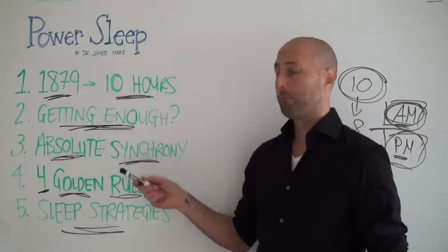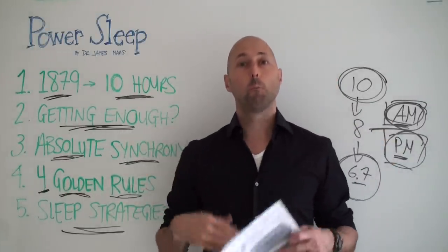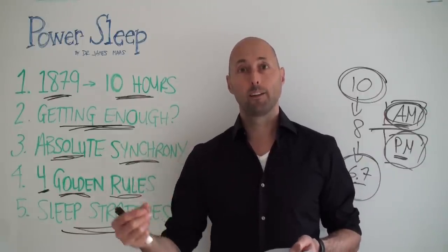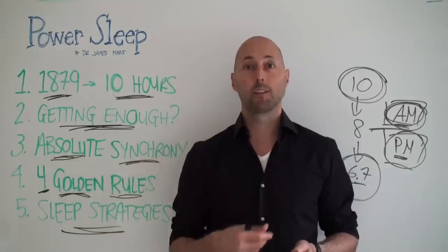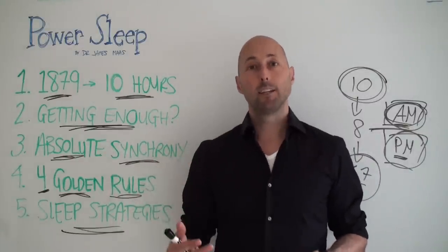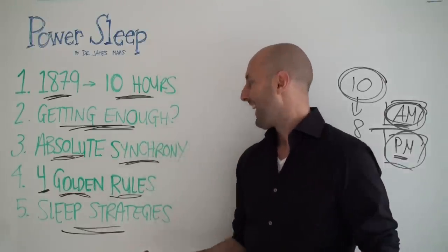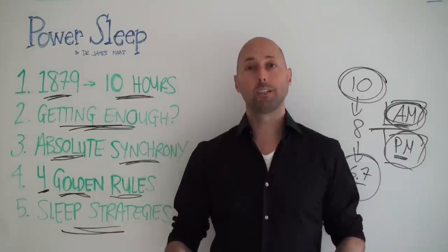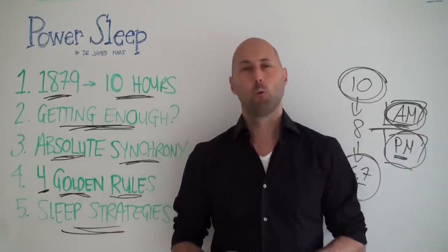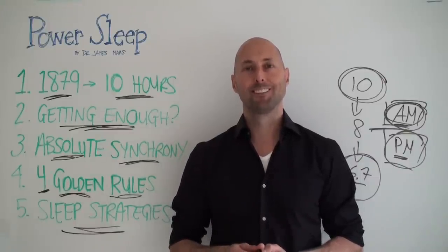Ten hours, getting enough, absolute synchrony. I love the idea of book ending our days, AM and PM rituals. What can you do to create more consistency? He says absolute synchrony, seven days a week, going to bed at or around the same time and getting up at or around the same time. Super powerful ideas. We talked about the four golden rules: get enough, be regular, make it continuous, and make up for lost sleep. And then we talked about some sleep strategies. Power of sleep. Quick look at this great book. Get your sleep on. If you're getting enough, congratulations. If you're not, what can you do to take one baby step toward optimizing that part of your life? Hope you dug it. Look forward to sharing more with you soon. Have another awesome day.